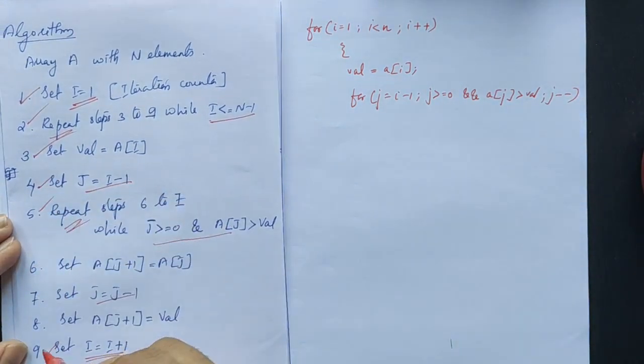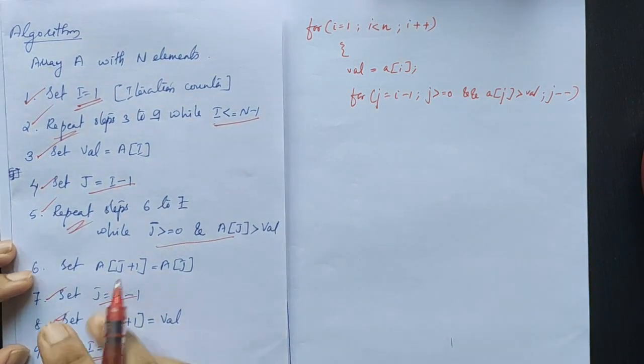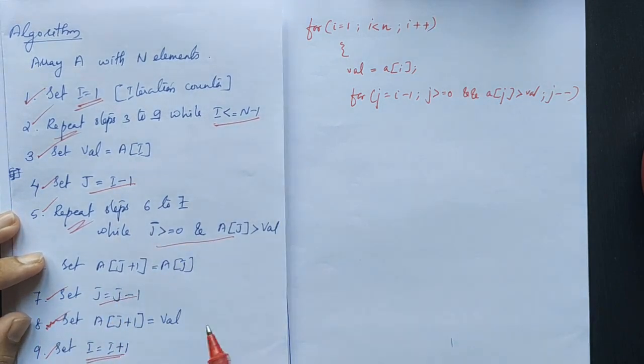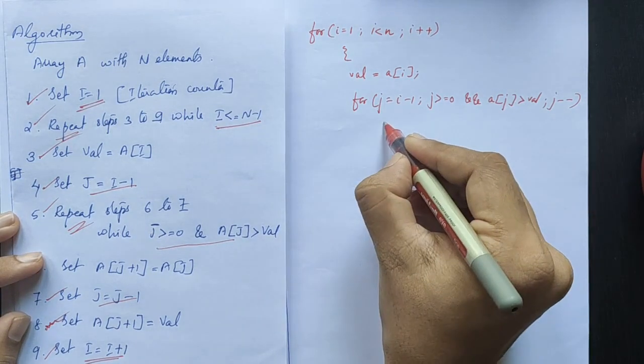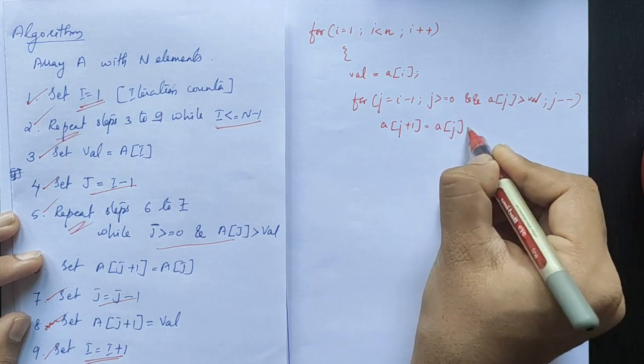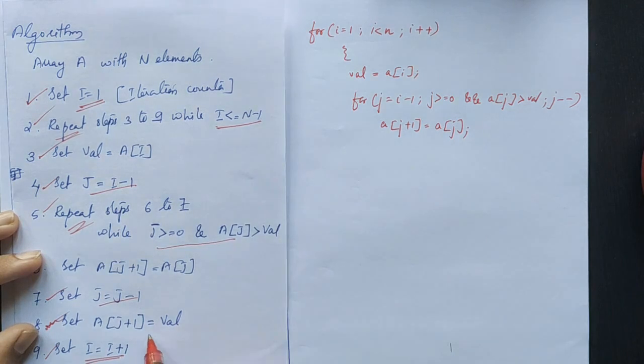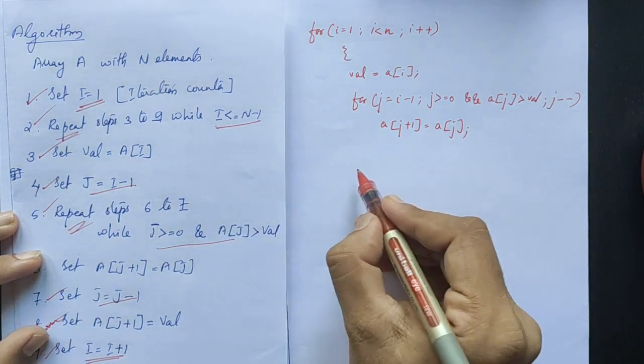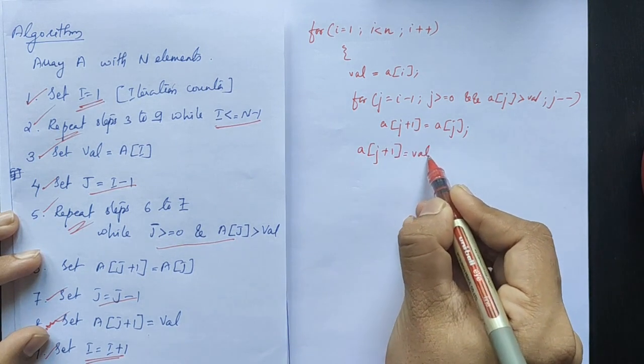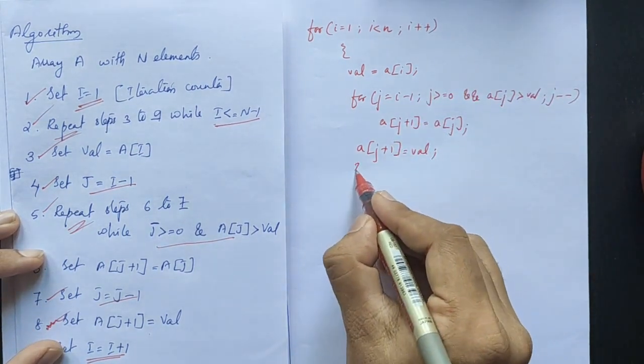After these statements, in the j loop, we shift elements. The statement is a of j plus 1 is equal to a of j. Then a of j plus 1 is equal to val.